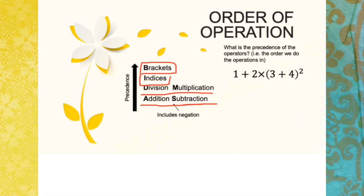By the way, with subtraction, this includes negation or the negative sign. So the precedence we follow is: brackets first, indices next, then division and multiplication from left to right, and finally addition and subtraction from left to right.